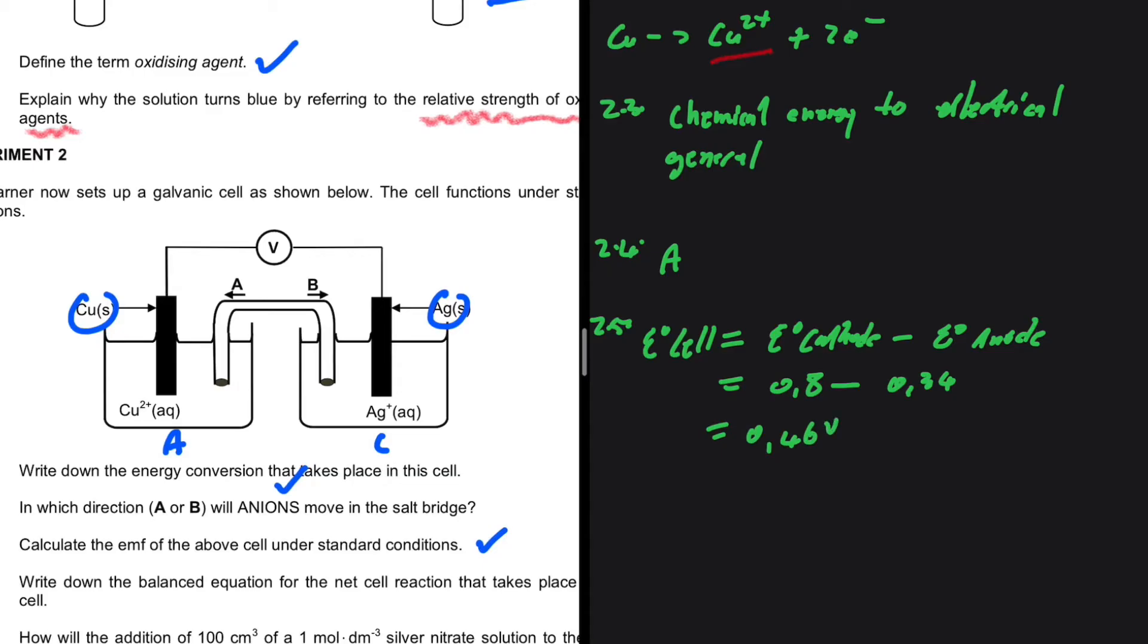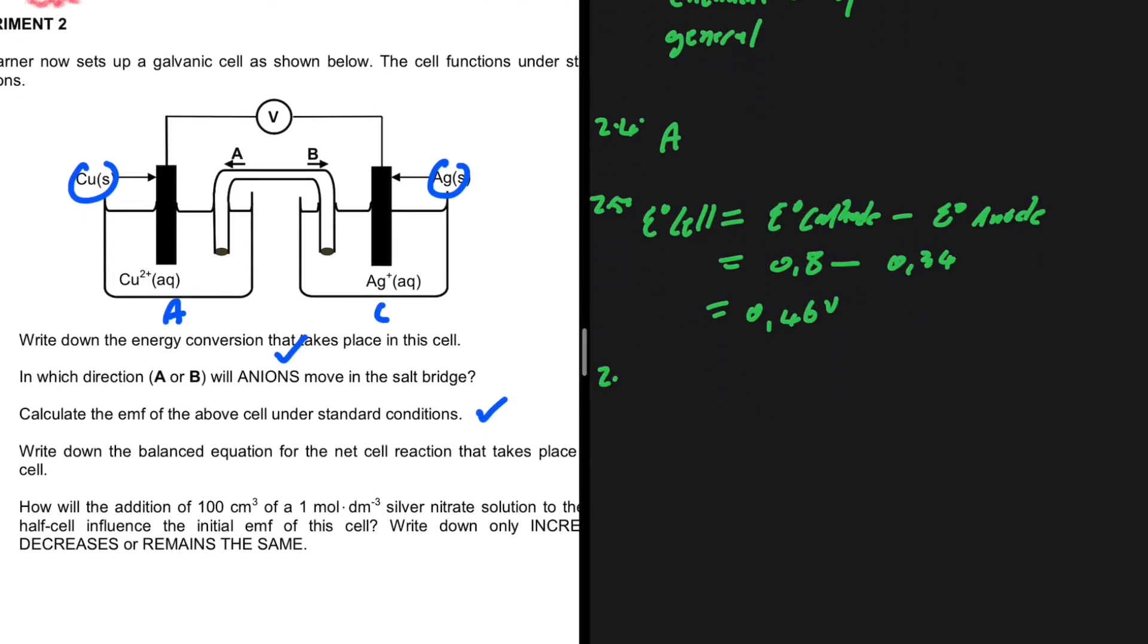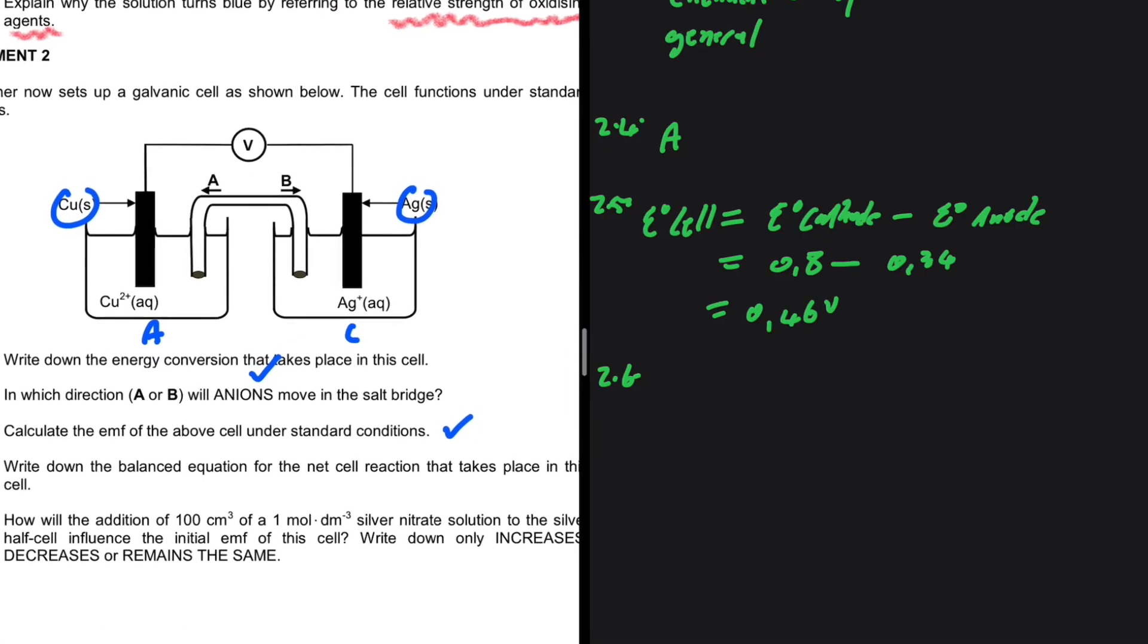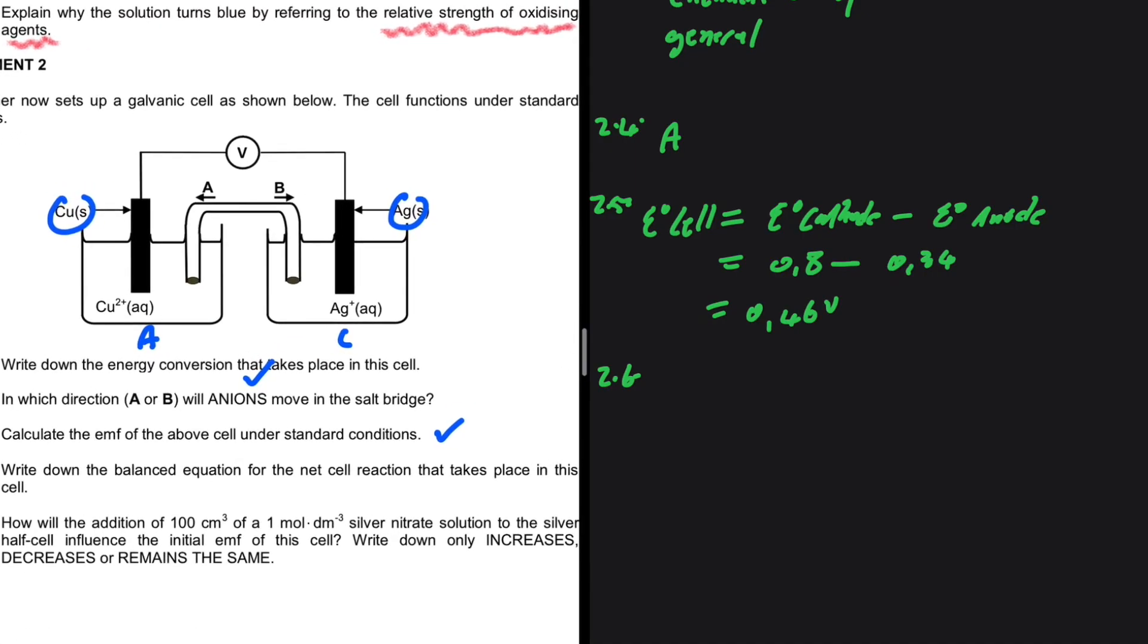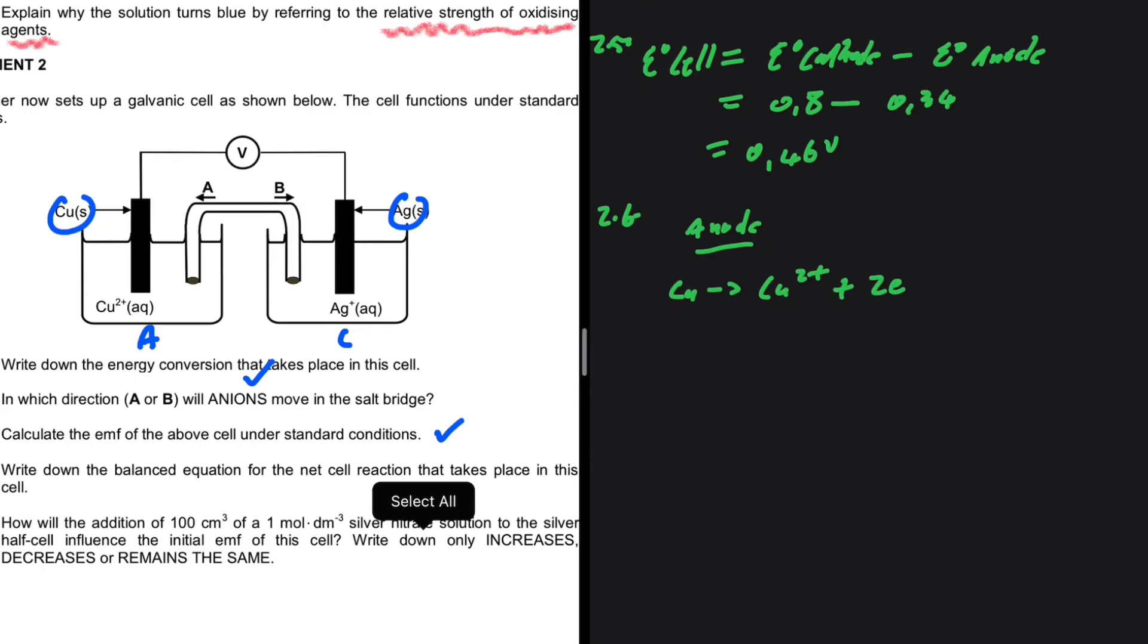Let's take a look at 2.6: write down the balanced equation for the net reaction that takes place in this cell. At the anode, we have copper getting oxidized to Cu²⁺ + 2e⁻. At the cathode, we have Ag⁺ + e⁻ to give us Ag.